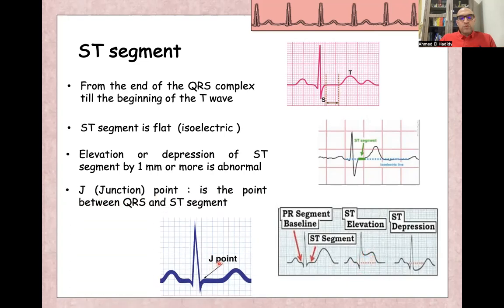We have what we call J point. J point is a junction point between the QRS complex and ST segment. Exactly this point, what we call junctional or J point.